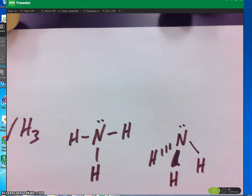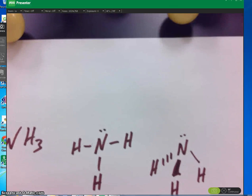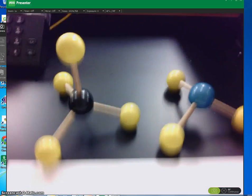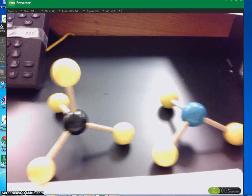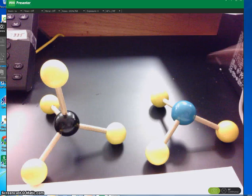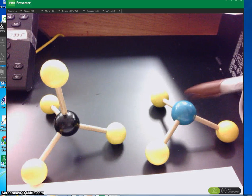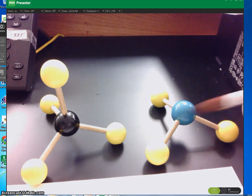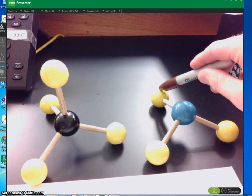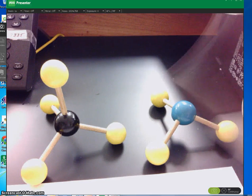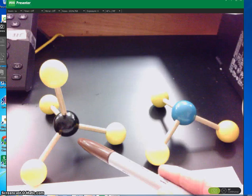Let's look at a model of NH3. This is the nitrogen, and these are the three hydrogens. You can see that its geometry is very similar to the tetrahedral shape.